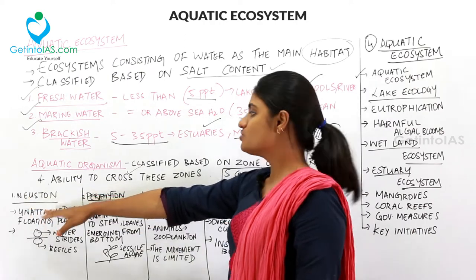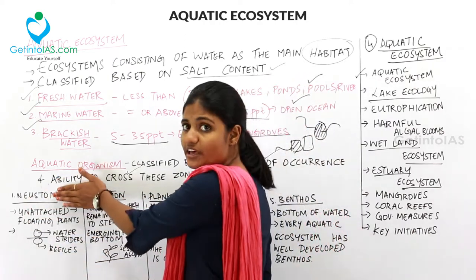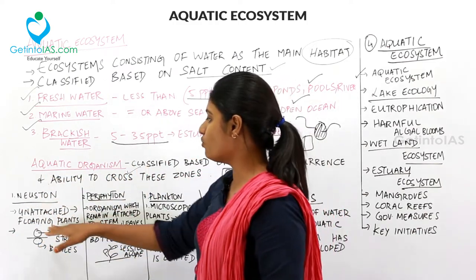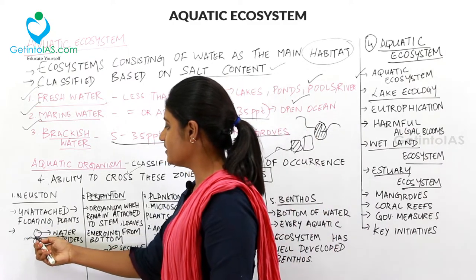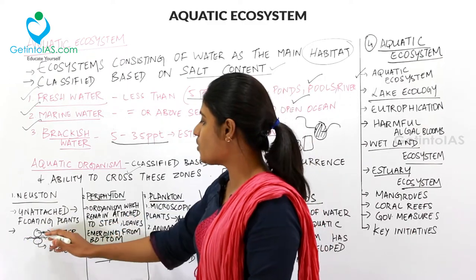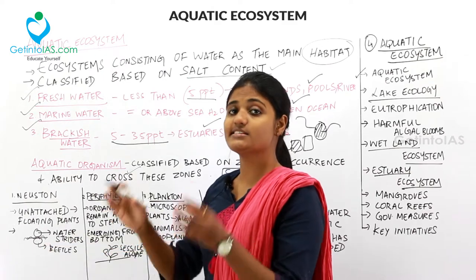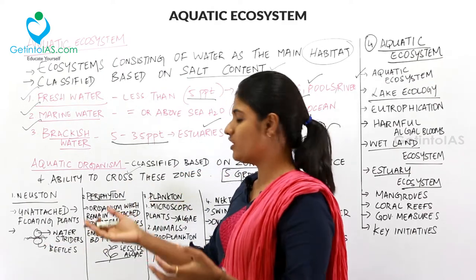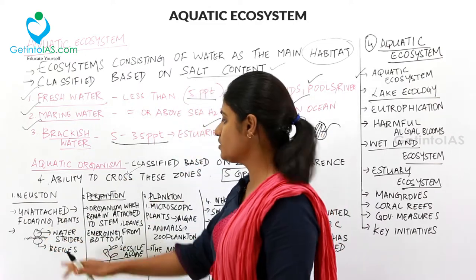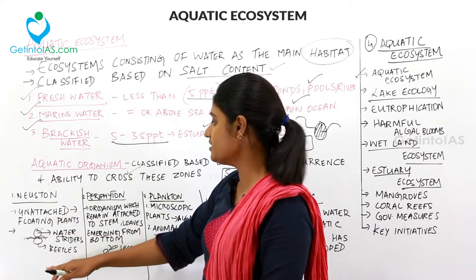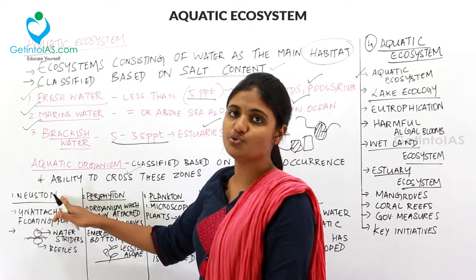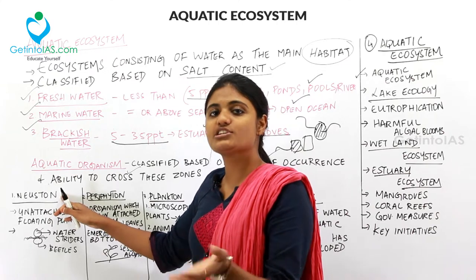Neuston are organisms that are generally unattached — they float either above or below the water surface, without being attached to the bottom. For example, water striders float above the water and beetles float below. Neuston are generally not attached to any surface.